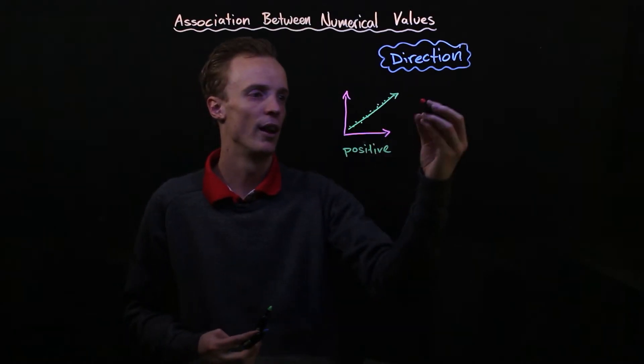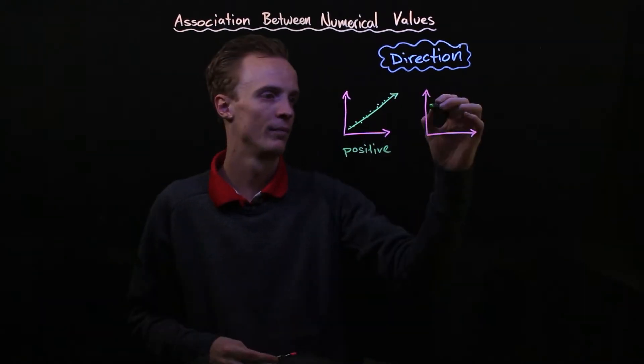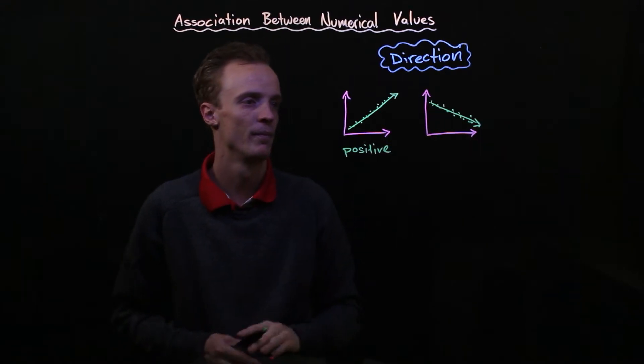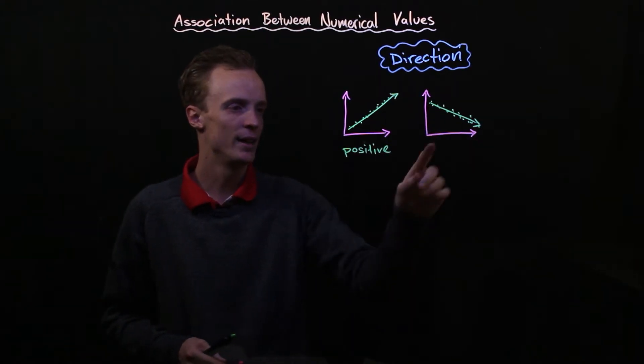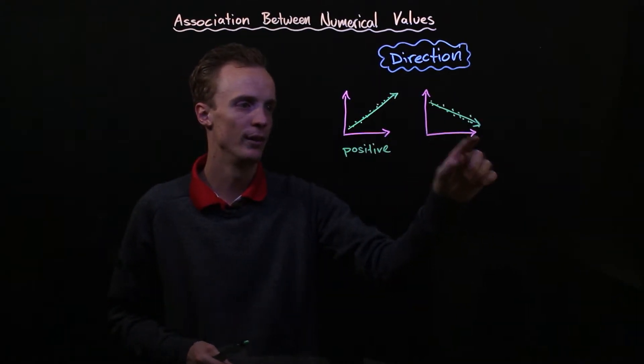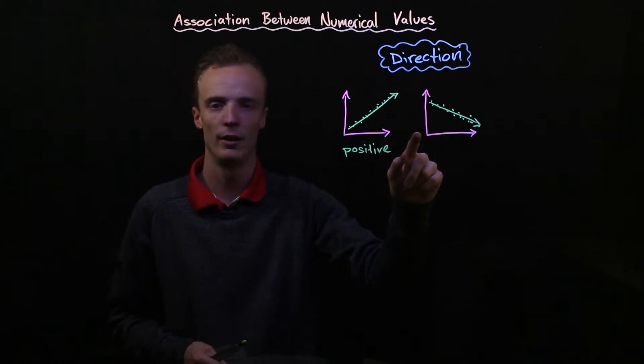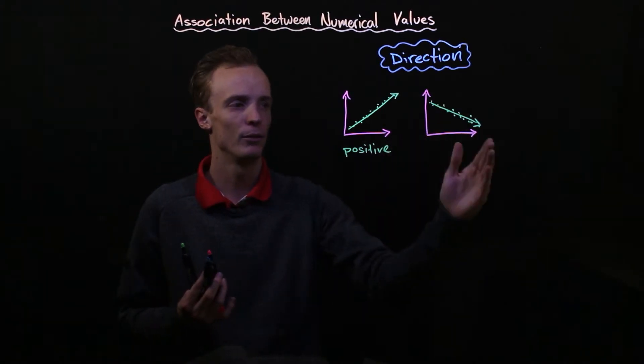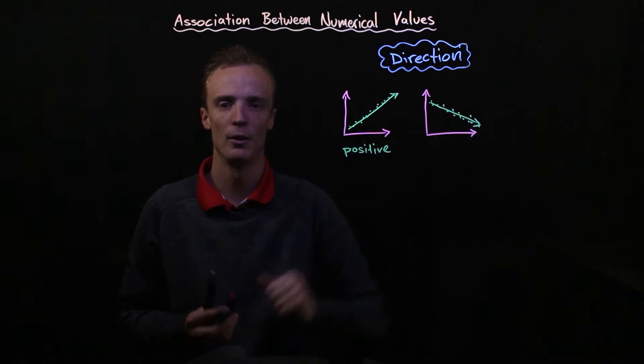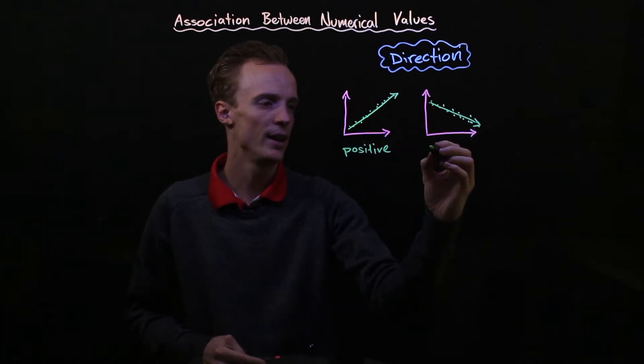The second direction looks like this where as the explanatory variable increases the response variable decreases or as it moves from left to right it seems to go downhill. And we call this a negative relationship.